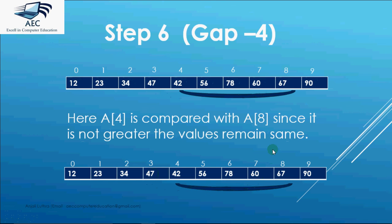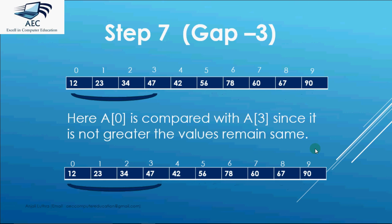Then a[4] is compared with a[8]. And finally a[5] is compared with a[9]. Step 6 becomes over here. Then comes step 7 having 7 comparisons now at the gap of 3. So a[0] compared with a[3], a[1] compared with a[4], a[2] compared with a[5], a[3] compared with a[6].